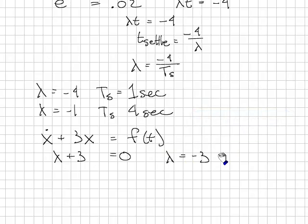Because the root is less than 0, it lies in the left half side of the complex plane, thus the system is stable. It decays, and the decay rate, t s, is equal to minus 4 over minus 3, 1.3 seconds for this system to decay.